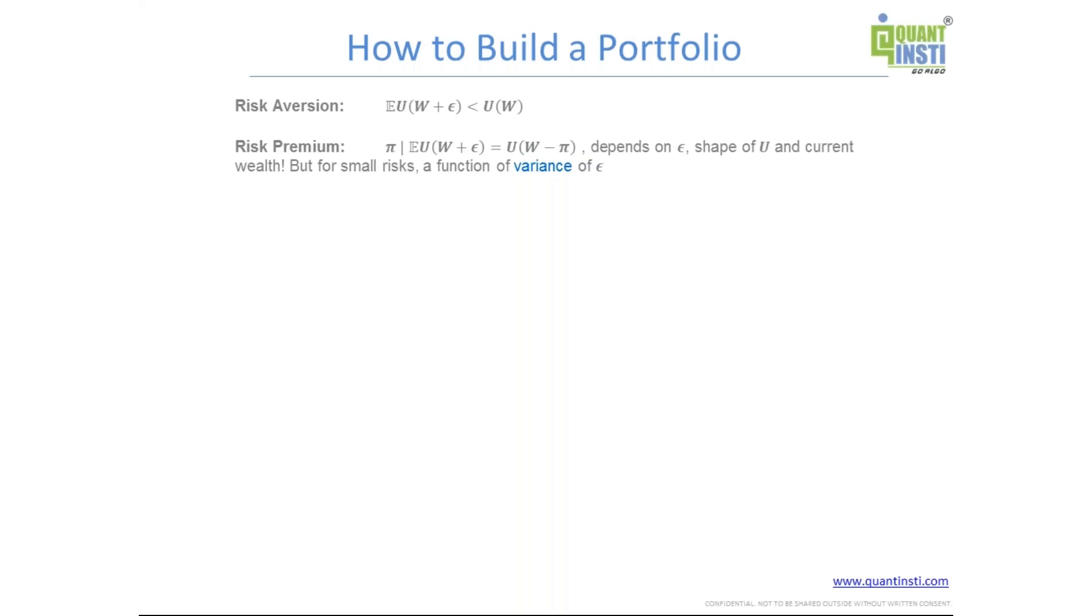Now of course it becomes a very complicated expression and it depends on many things. It depends on W, it depends on the shape, the distribution of epsilon itself, and many other parameters. But if epsilon is small, then it becomes by some mathematical tricks called Taylor expansion, it becomes a function of the variance of epsilon. So this is how we see that for certain cases, this very complicated expression boils down to just a function of variance. And this brings us closer to a way of building our portfolio.